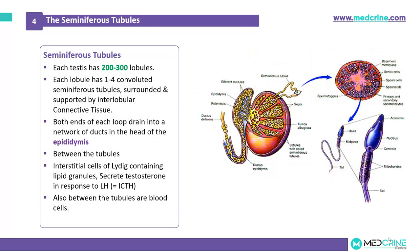Each testicle has 200–300 lobules, and each lobule has about 1–4 convoluted seminiferous tubules surrounded and supported by an interlobular connective tissue. By each end, each lobe drains into a network of ducts in the head of the epididymis. Between the tubules we have interstitial cells, known as Leydig cells, containing lipid granules which secrete testosterone in response to luteinizing hormone. We also have blood vessels in between these tubules.